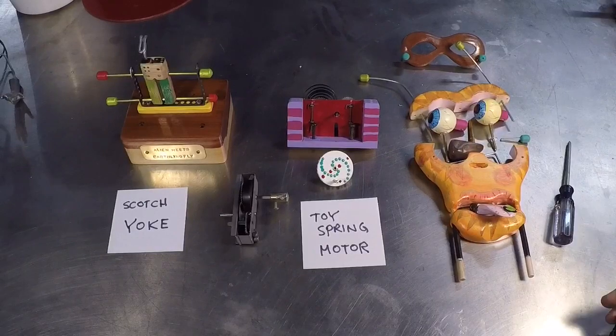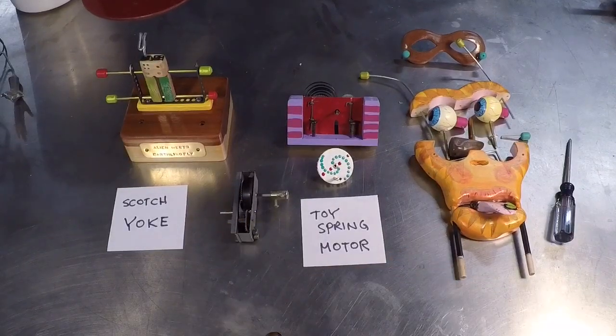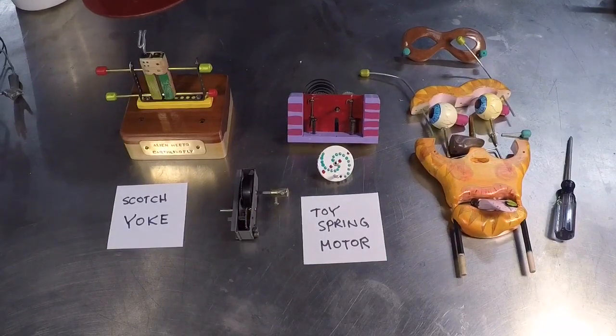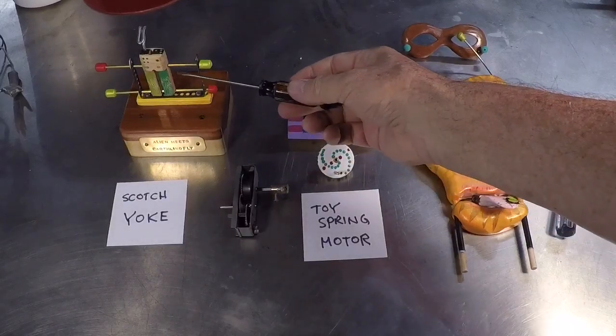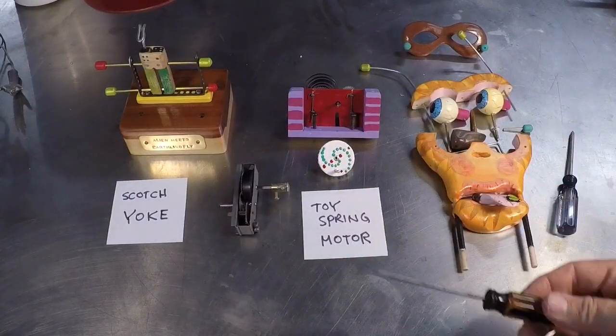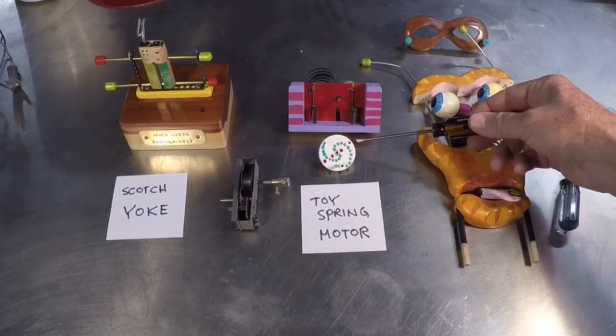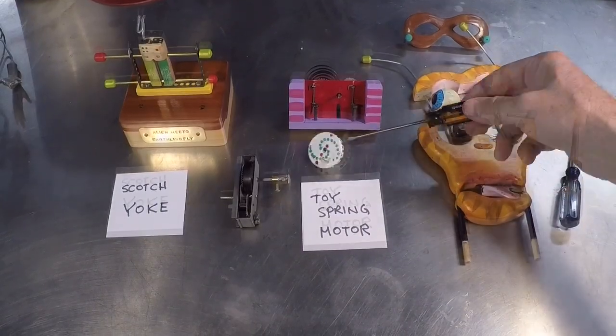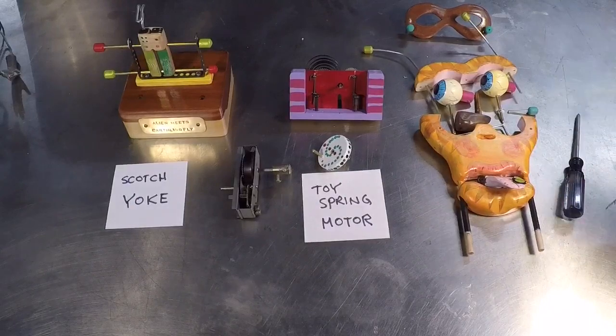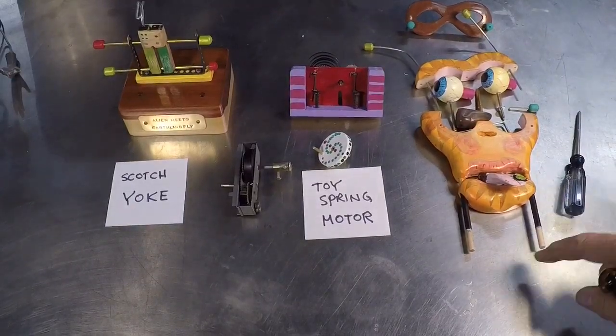So here the automaton is taken apart. I've got the subassemblies and major parts here, and I'll go through each one. This is the base with the scotch yoke carriage, and here we have the spring motor, and it drives a little crank.